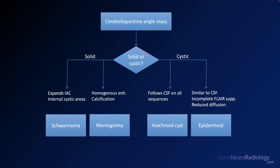First, decide whether the lesion is solid or cystic — specifically, does it have significant enhancing components? In this case, there is pretty solid enhancement. If the lesion is expanding the IAC or has internal cystic areas, that leads you more toward a schwannoma. If it has homogeneous enhancement, perhaps some calcification or dural tails, and may involve but not expand the IAC, then think about meningioma.